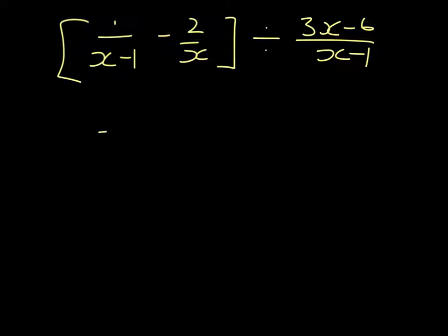We must have a common denominator, so to get the common denominator we multiply x by x minus 1. In the first fraction, if we multiply the denominator by x, we have to multiply the numerator by x.